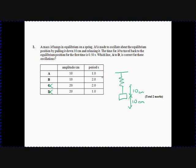Then we've got the period to look at. You have to read carefully here. The time to travel back up to the equilibrium position is half a second. So it starts down here, goes to there — that takes half a second. It then goes up to there, another half a second. Then it's got to go back down and back again. So the total time is two seconds. That cancels out A, and we end up with the answer being B.